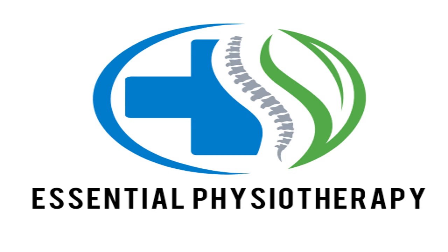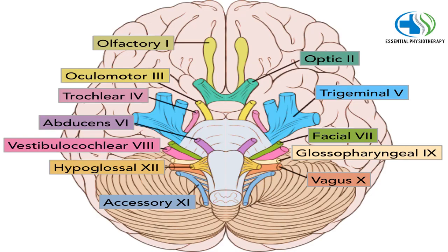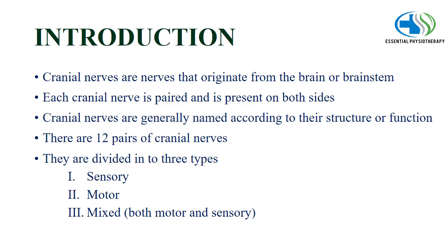Hello everyone, welcome to our YouTube channel Essential Physiotherapy. In this video we are going to have an overview of the cranial nerves. These are the 12 pairs of cranial nerves. Cranial nerves are nerves that originate from the brain or brainstem. Each cranial nerve is paired and is present on both sides, on the right and left hemisphere. Cranial nerves are generally named according to their structure or function. There are 12 pairs of cranial nerves and they are divided into three types: the sensory, motor and the mixed type.